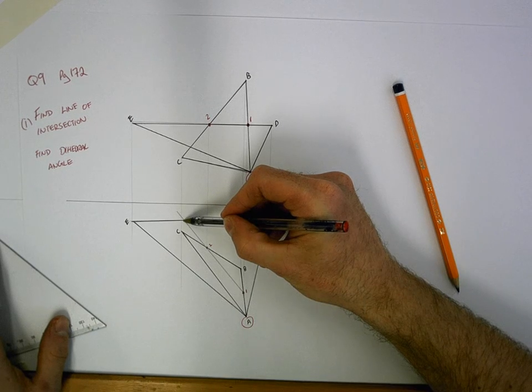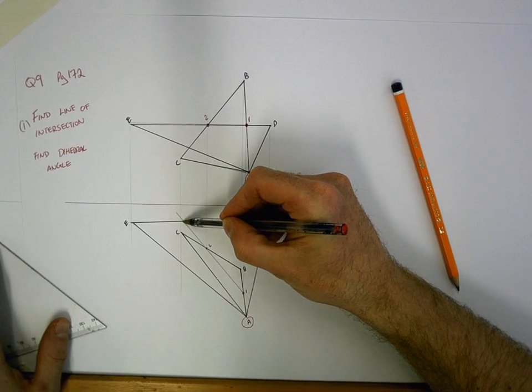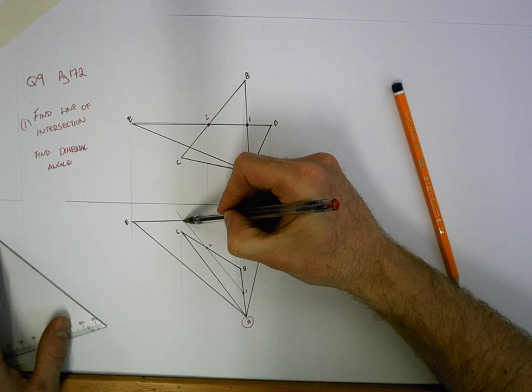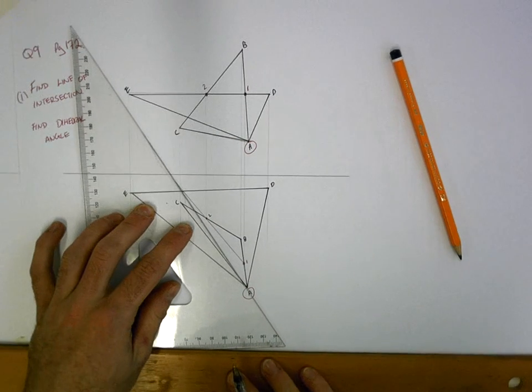That point is on the line of intersection. So now we have a second point on the line of intersection. We have point A and we have the one we've just found. If we join them together, we'll have drawn our line of intersection in the plan view.